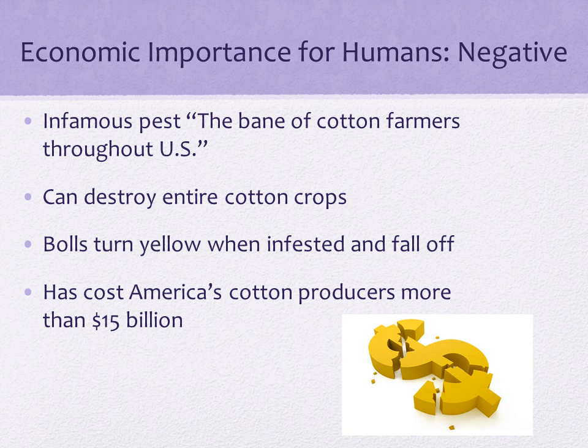Boll weevil can destroy entire cotton crops. When the bolls are infested with weevils, they turn yellow and fall off the plant, ruining the cotton fibers. If cotton is heavily infested, the plants may still grow but produce few bolls, which are the parts of the plant that produce the cotton fibers that we use. The boll weevil is an infamous pest that has been the bane of cotton farmers throughout the United States since it was accidentally introduced from Mexico. Boll weevil migrated from Mexico to the U.S. and spread rapidly throughout the cotton belt. Since then, it has cost America's cotton producers more than $15 billion from yield losses and costs to control the insect pest.